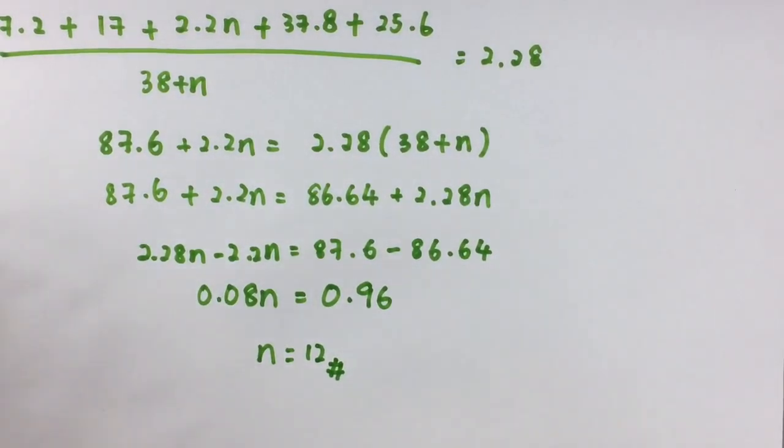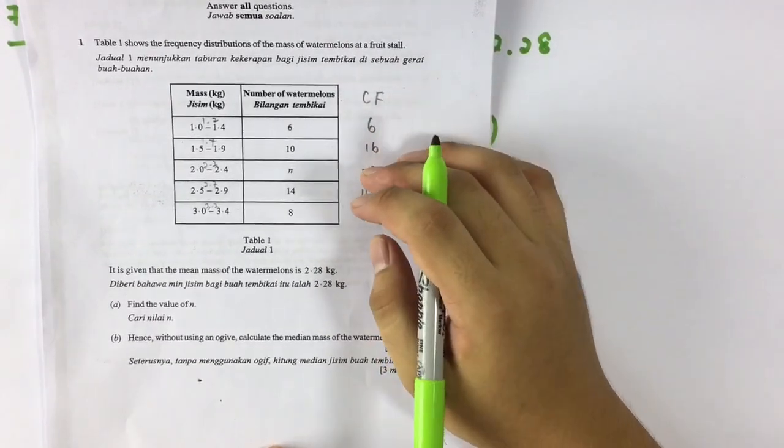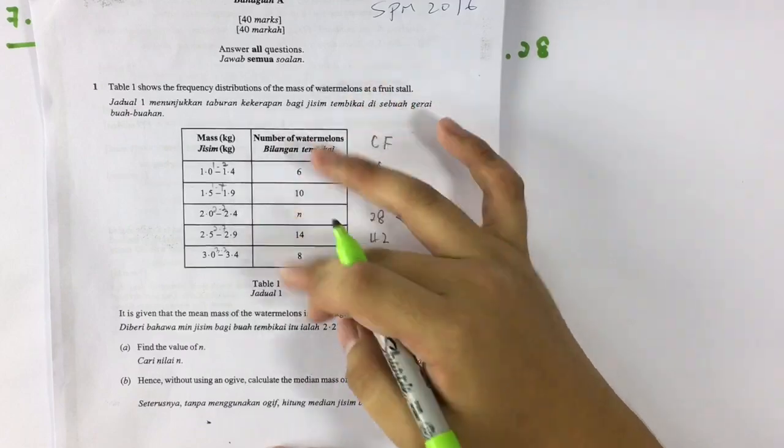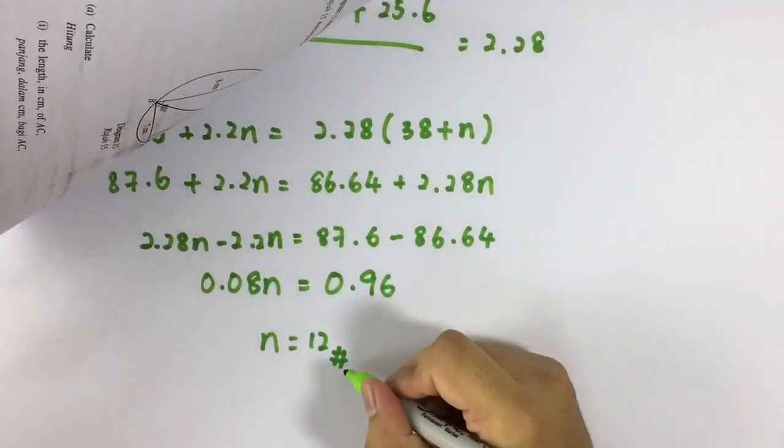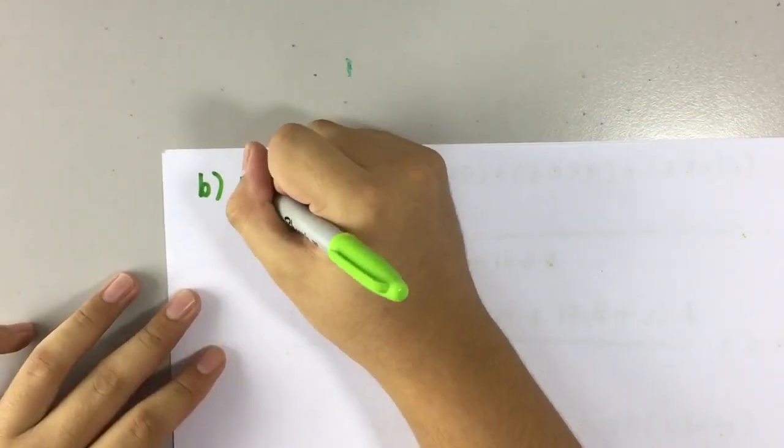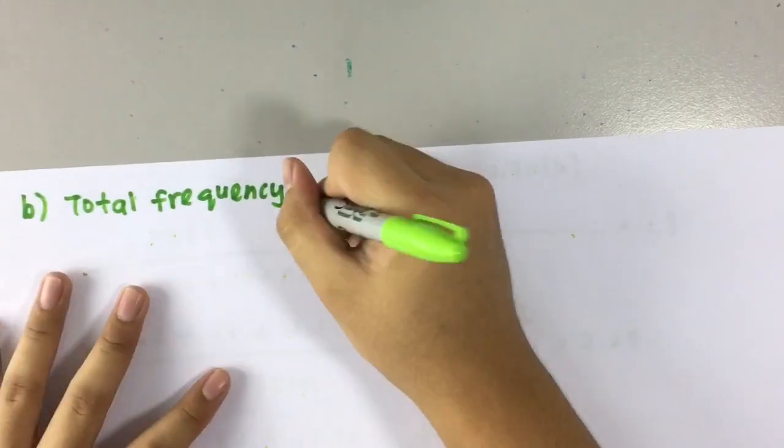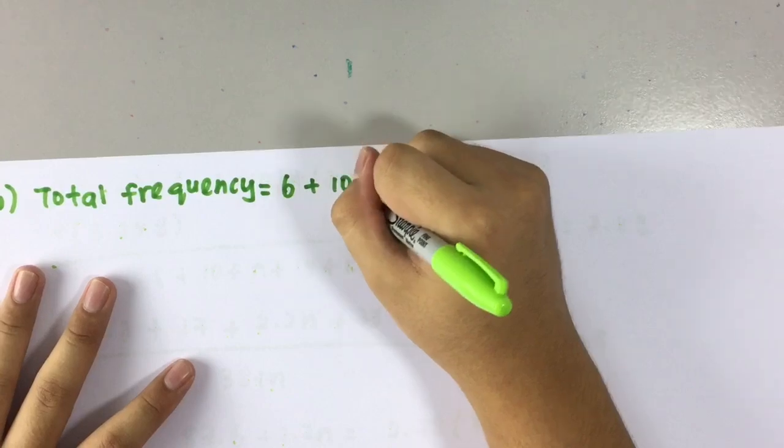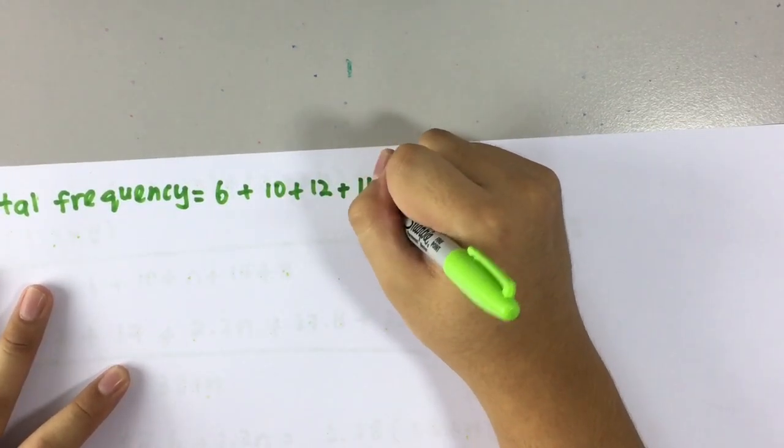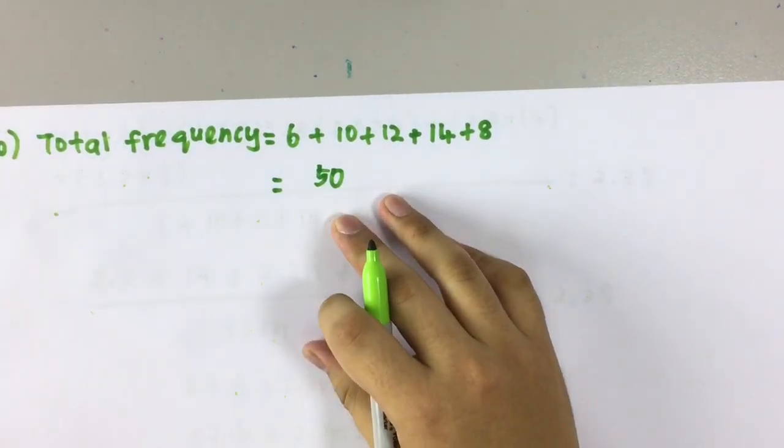So settled for part A and we know that n equals to 12. So we can now know the total frequency. How do we know the total frequency? Plus this up because we now know the value of n. Total frequency equals to 6 plus 10 plus 12 plus 14 plus 8, so all this becomes 50.